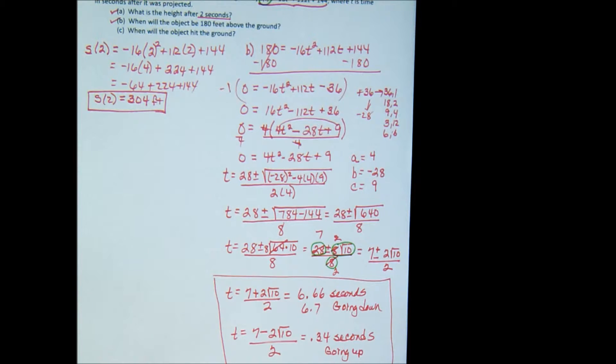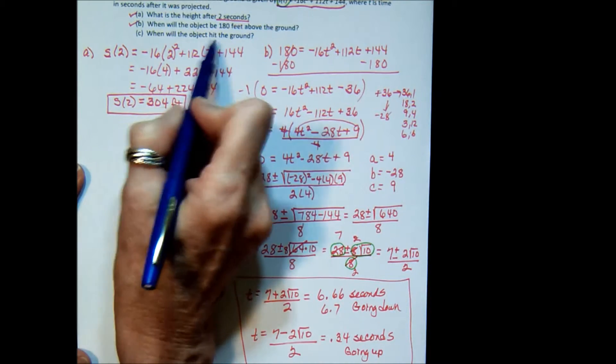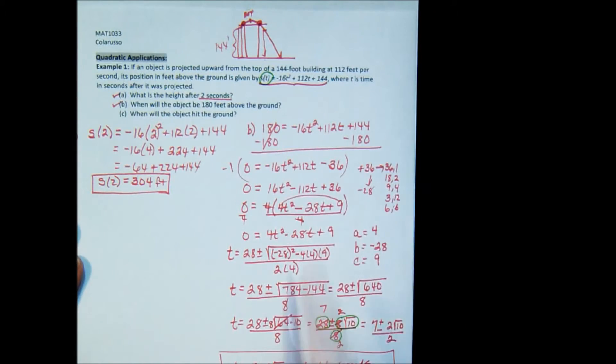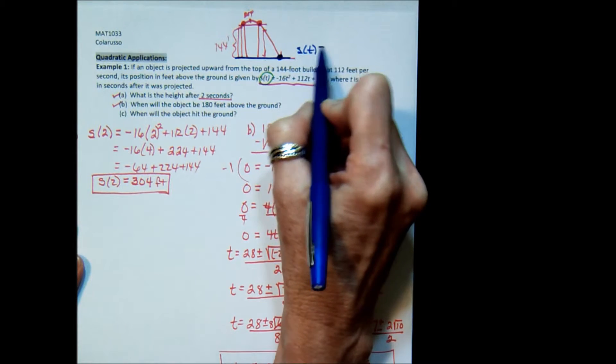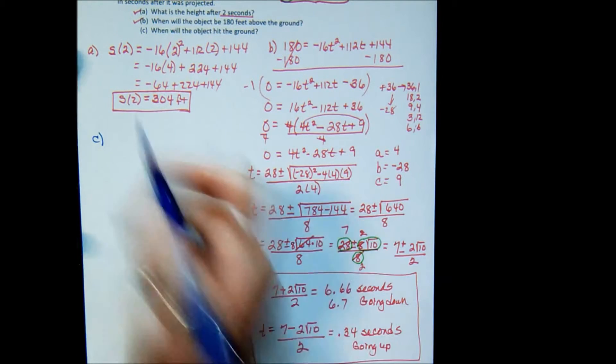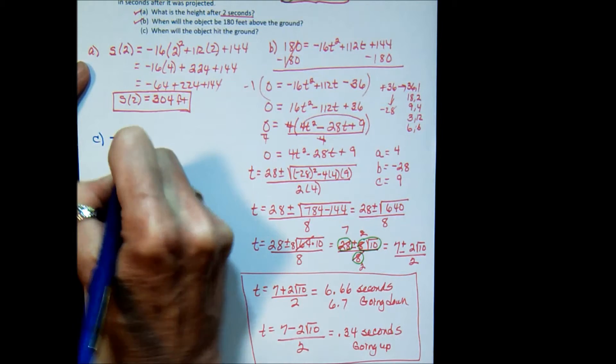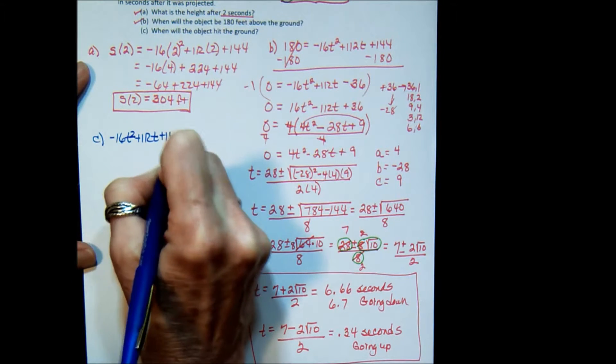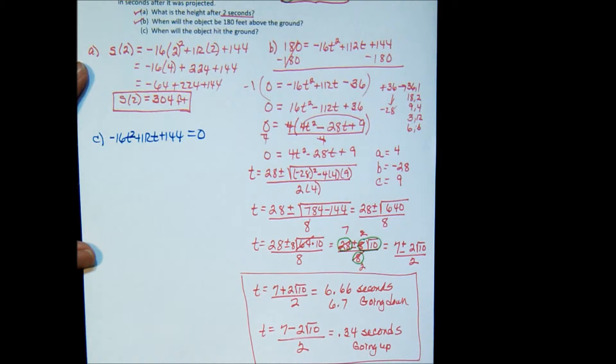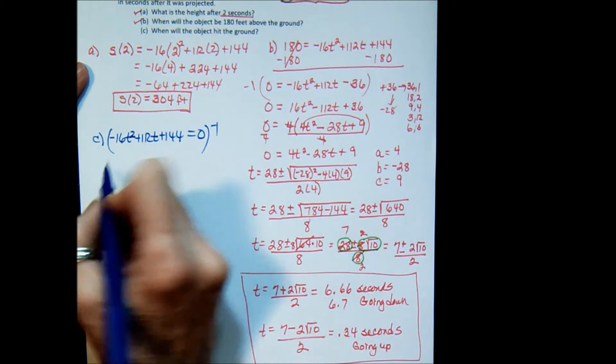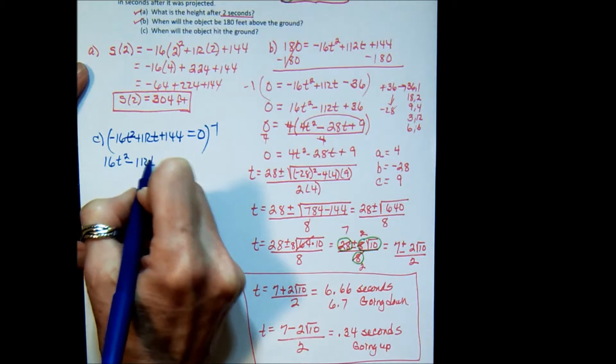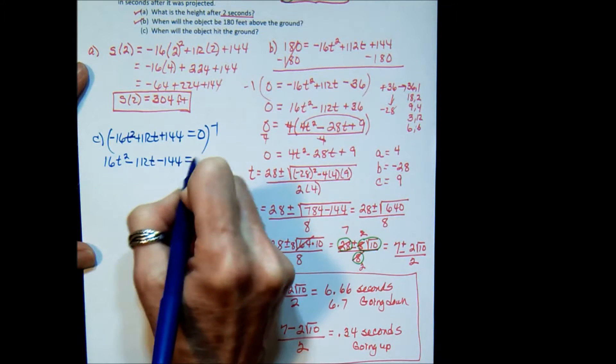I'm going to change colors so you can kind of follow along with this next piece that we're doing. The next one says, when will it hit the ground? So going back to our drawing, at the time that it hits the ground right here, its height, or s of t, is equal to zero. So what I need to do for part c is I need to set my equation negative 16t squared plus 112t plus 144. I need to set it equal to zero. The first thing that I'm going to do again is to multiply the whole thing by negative one. So that's going to give me 16t squared minus 112t minus 144 equals zero.